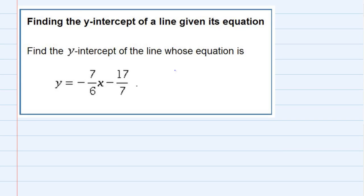Finding the y-intercept of a line given its equation. We're asked to find the y-intercept of the line whose equation is y = -7/6x - 17/7.